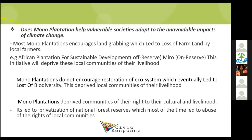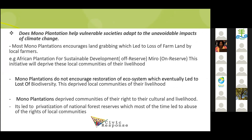Does mono plantation help vulnerable societies adapt to the unavoidable impacts of climate change? Experience on the ground at both the Miro site and the APSD site shows that most mono plantations lead to land grabbing. Companies need huge acres of land to do mono plantations — land that communities already occupied for farming. In the Miro case, the government gave forest reserves to farmers to do the modified taungya system — planting food crops while integrating trees — but then took the land away and gave it to Miro, evicting all those communities.